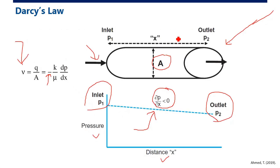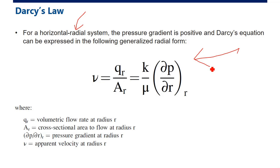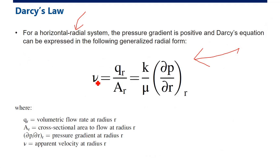That was for linear flow. For horizontal radial flow, the pressure gradient is positive, and Darcy's equation can be expressed in a generalized radial form. We do not need the negative sign for radial flow. Apparent velocity equals volumetric rate divided by the cross-sectional area to flow at radius r, multiplied by permeability over viscosity times the pressure gradient.